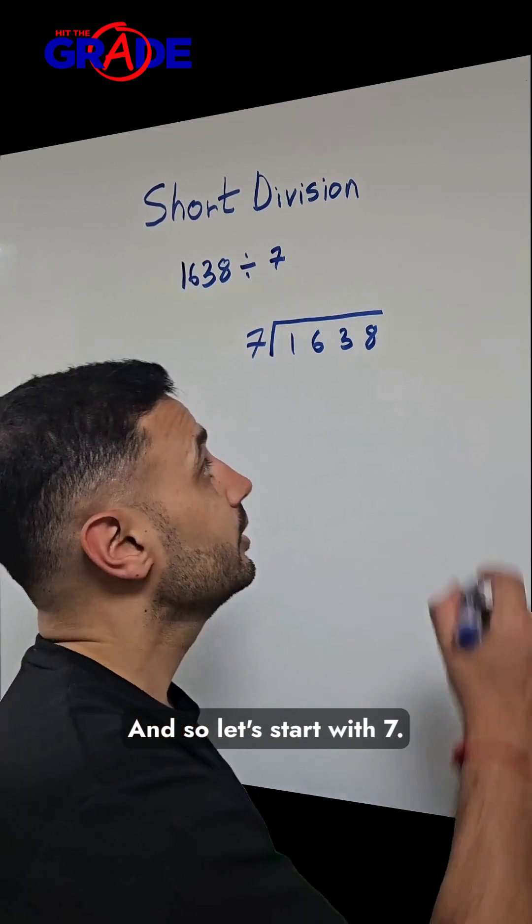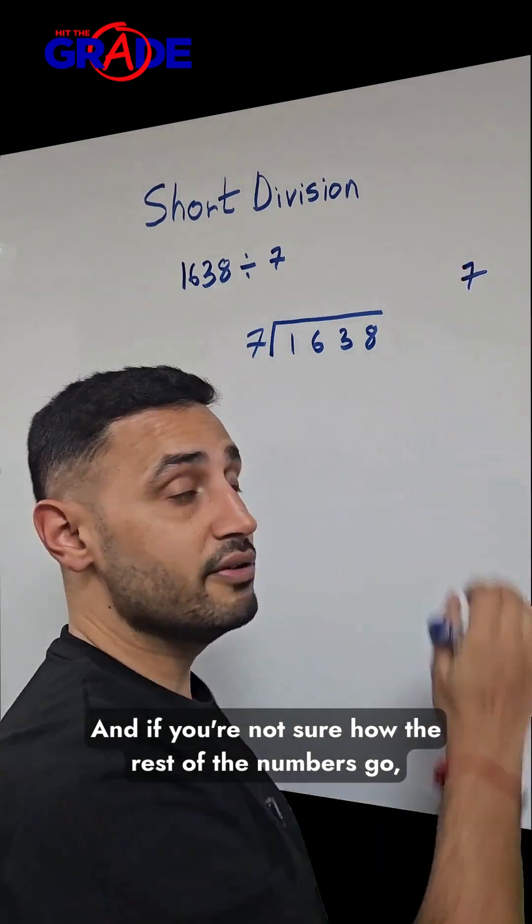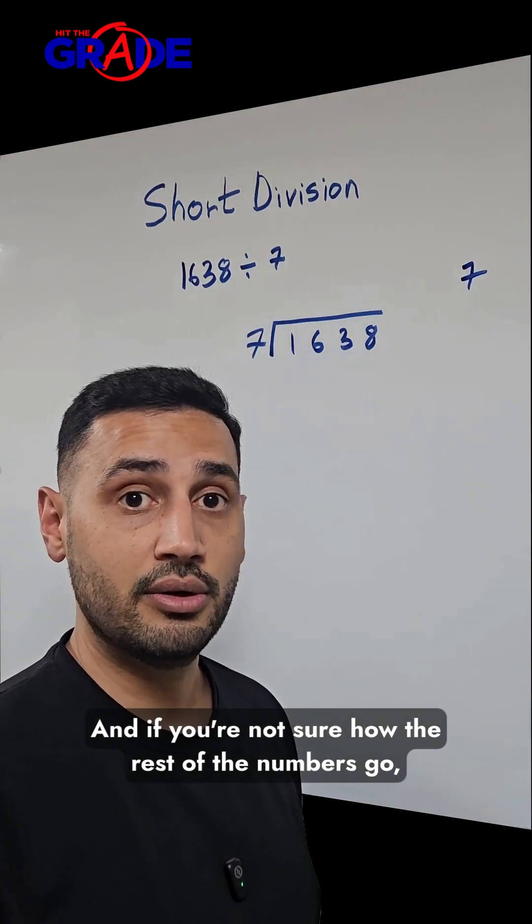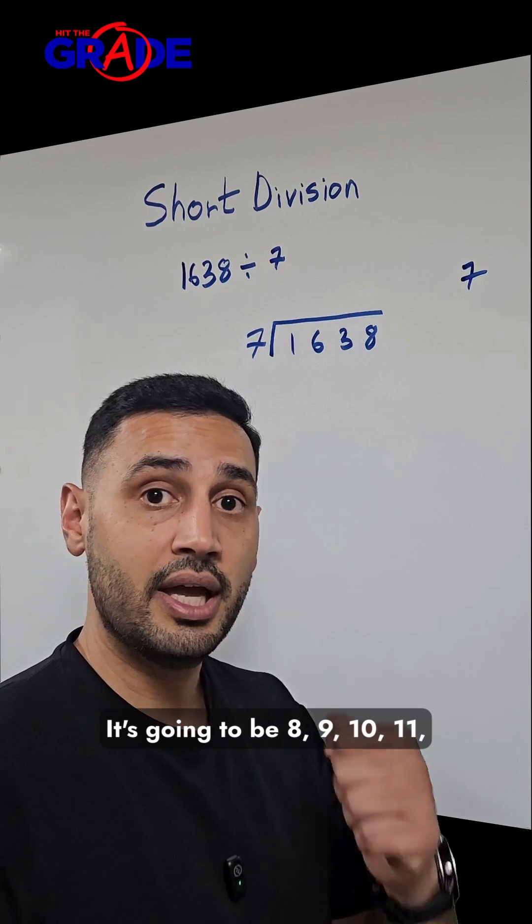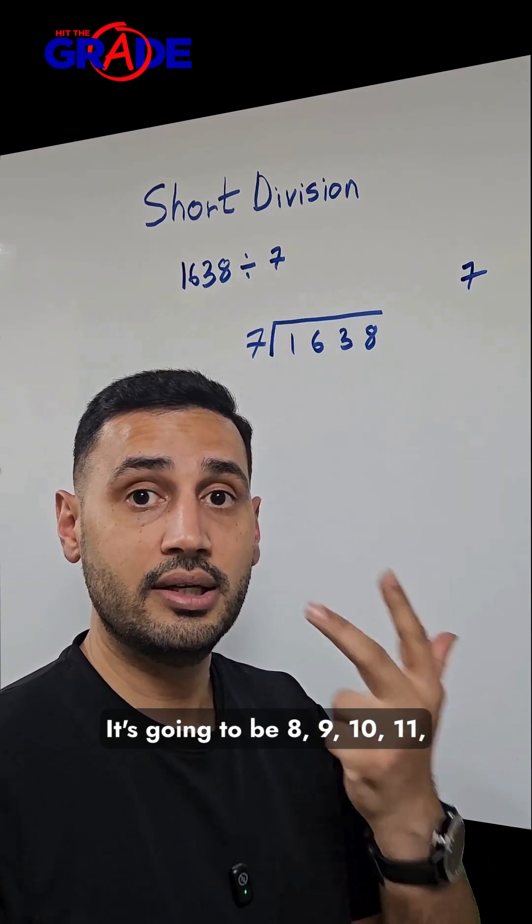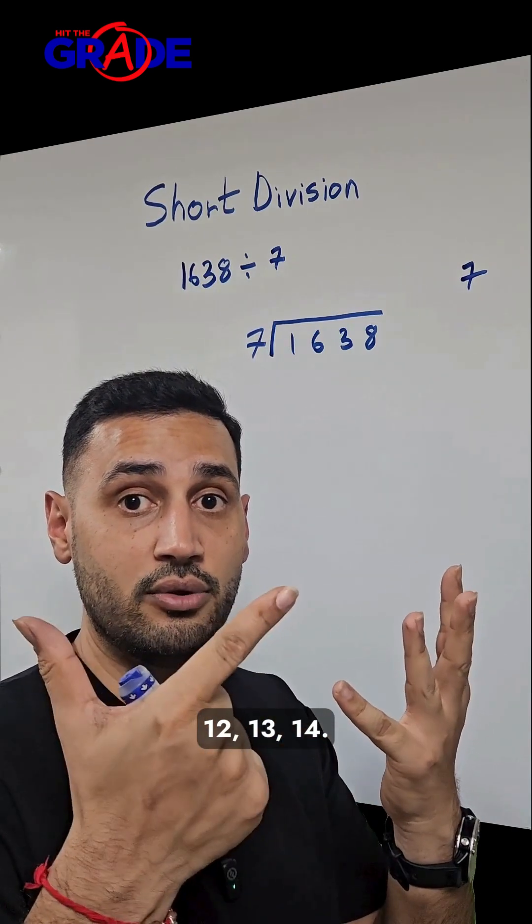And so let's start with 7. And if you're not sure how the rest of the numbers go, let's just add 7. So we start with 7. It's going to be 8, 9, 10, 11, 12, 13, 14.